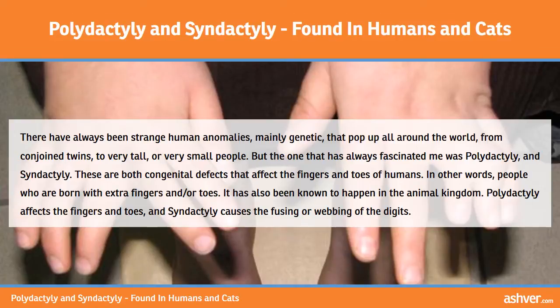There have always been strange human anomalies, mainly genetic, that pop up all around the world — from conjoined twins to very tall or very small people. But the one that has always fascinated me was polydactyly and syndactyly. These are both congenital defects that affect the fingers and toes of humans — people who are born with extra fingers and/or toes. It has also been known to happen in the animal kingdom. Polydactyly affects the fingers and toes, and syndactyly causes the fusing or webbing of the digits.